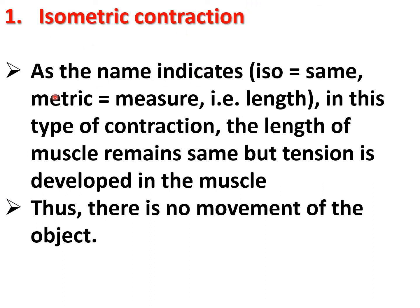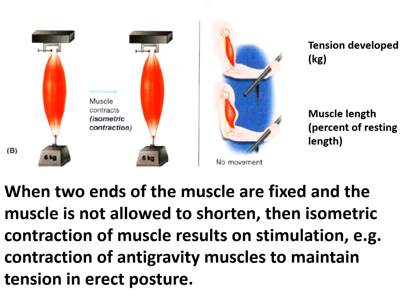Isometric contraction — as the name indicates, 'iso' means same and 'metric' means measure. In this type of contraction, the length of the muscle remains the same but tension is developed in the muscle, so there is no movement of the object. When the two ends of the muscle are fixed and the muscle is not allowed to shorten, isometric contraction results on stimulation — for example, contraction of the anti-gravity muscles to maintain tension in the erect posture.